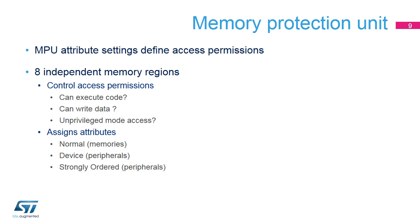The MPU is also in charge of assigning attributes to regions, called normal, device, and strongly ordered. Normal is used to map memories. Device and strongly ordered attributes are used to map peripherals. The difference between them is the ability to buffer data during peripheral access: the device attribute enables write-posting, while a store to a strongly ordered region stalls the pipeline until the response is received from the targeted peripheral.